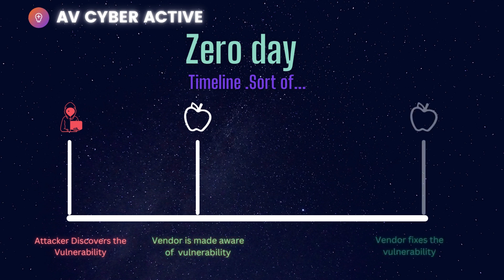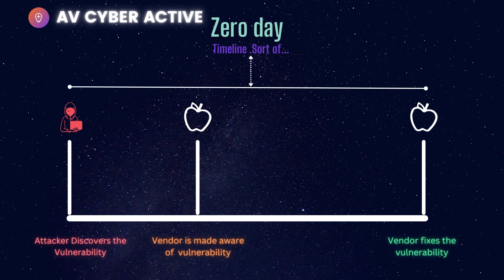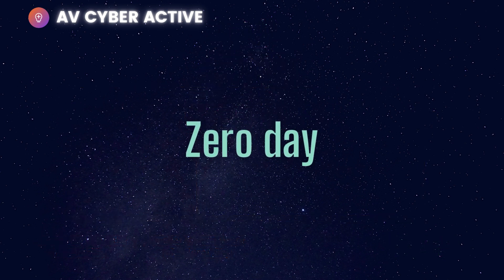At last, the vendor fixes the vulnerability — this is where patches are released, CVEs get fixed, and Microsoft releases what they call Patch Tuesday, which happens on every second Tuesday of the month, where they release a number of patches. The entire window from when the attacker discovers the vulnerability until it gets fixed is called the zero-day timeline.